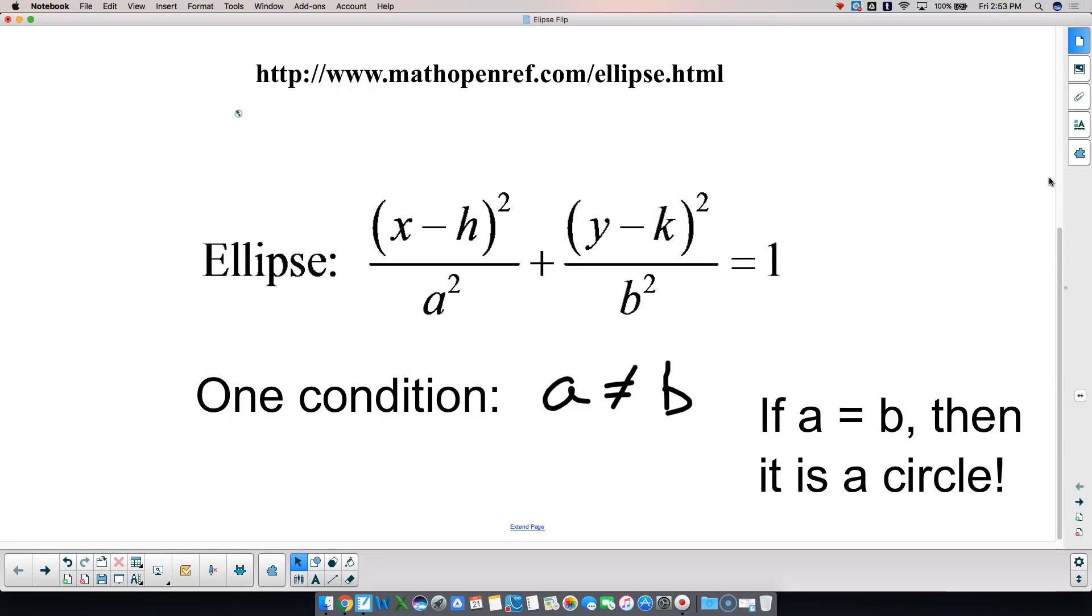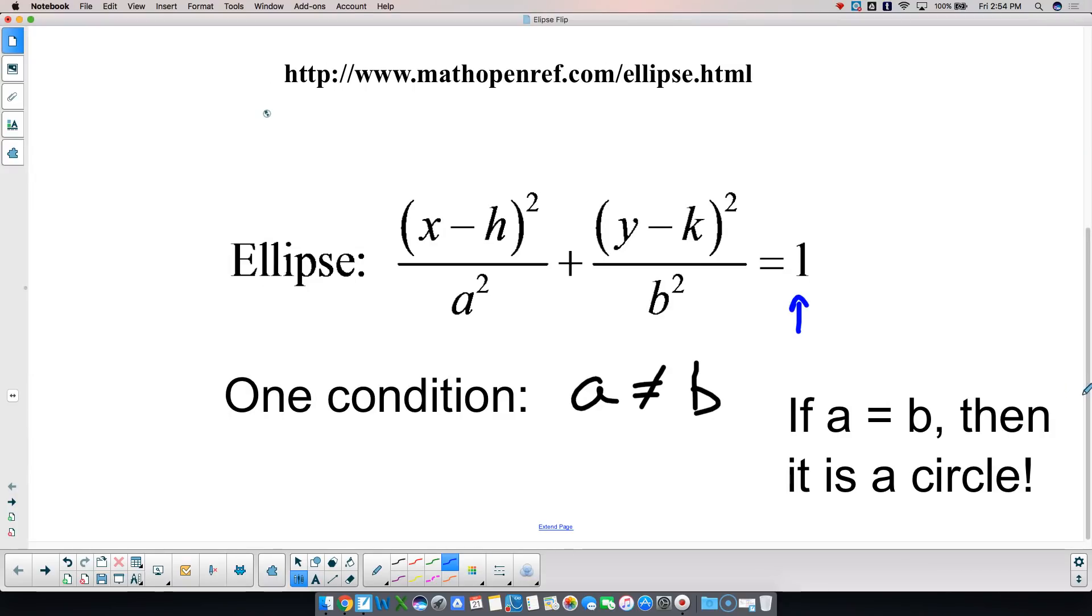A couple of things that we can notice about here, we, again, see H and K coming into play, okay. Again, they're inside a set of parentheses, so we're thinking oppositely along the lines with that, okay. And notice that an ellipse is always equal to one, okay. It's always here equal to one. So, we have to divide by that number out there, and we divide each term by, the way that you tell an ellipse from a circle is the coefficient on the squared terms are different. That's how you tell an ellipse from a circle. The coefficients on the squared terms for a circle are the same. The coefficients for the squared term on an ellipse are different.